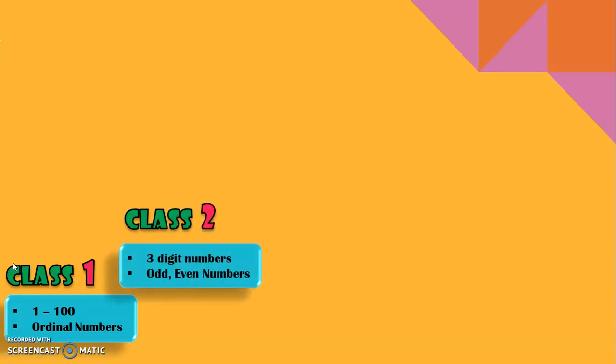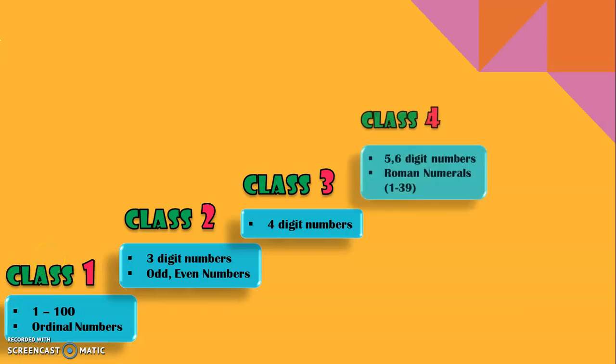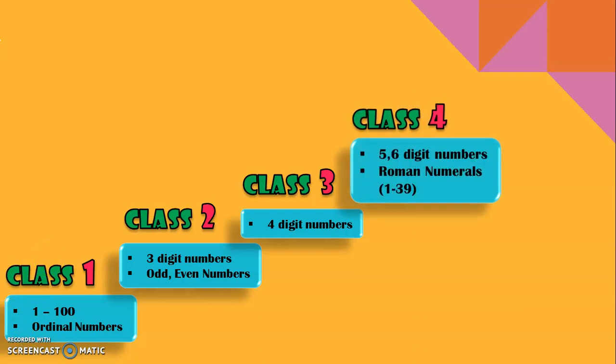In the evolution ladder of number concepts, in class 1, we saw all about 2-digit numbers and ordinal numbers. In class 2, we saw 3-digit numbers and odd and even numbers. In class 3, we dealt with 4-digit numbers. In class 4, we saw all details with respect to 5- and 6-digit numbers and also learn to write Roman numerals from 1 to 39.